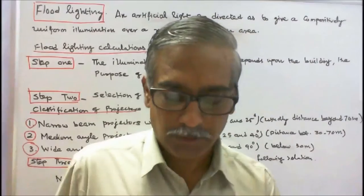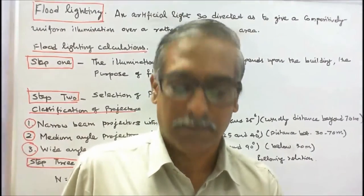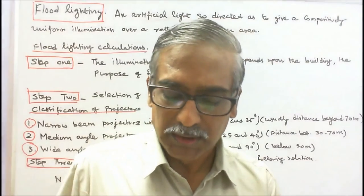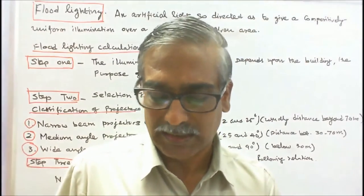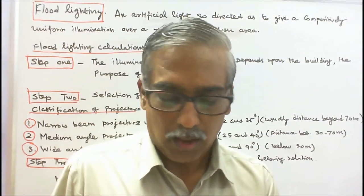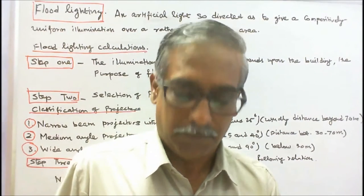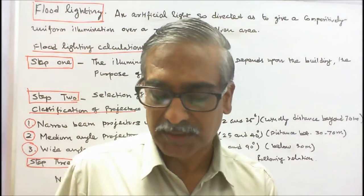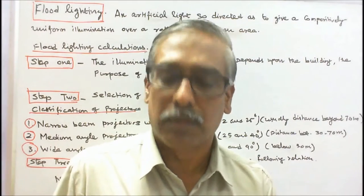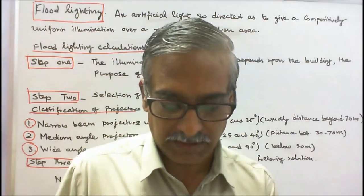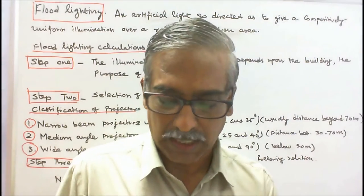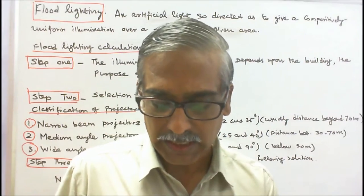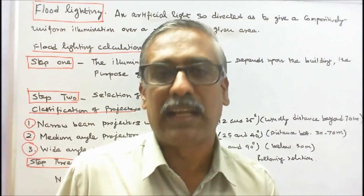The fourth term is Depreciation Factor. Due to dirt and dust on the projector surface, the effectiveness of the projector reduces from 50 to 100%, and hence more light should be provided than is theoretically required.